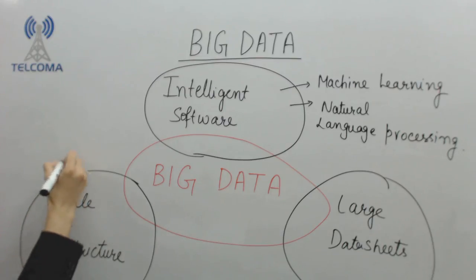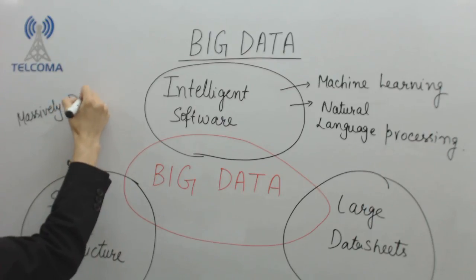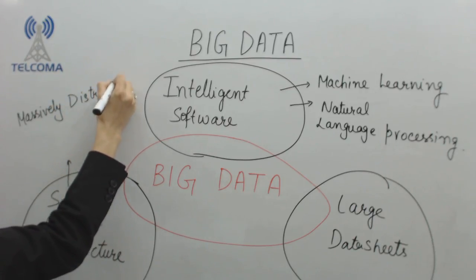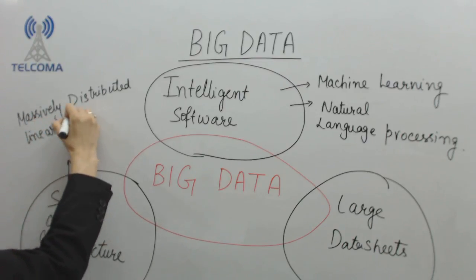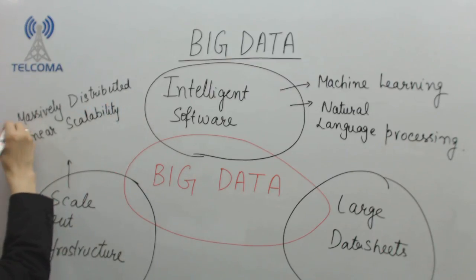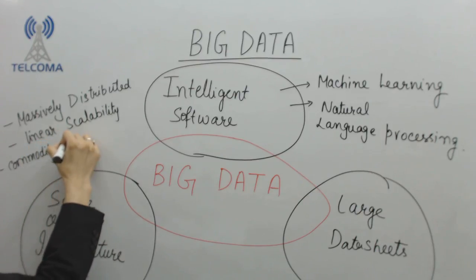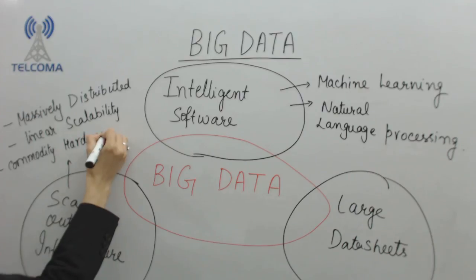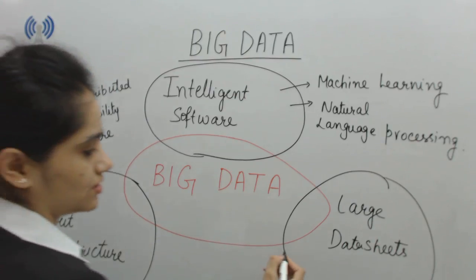Under scale-out infrastructure, we have massively distributed architecture, linear scalability, and commodity hardware. These are the terms within scale-out infrastructure.